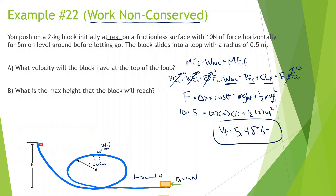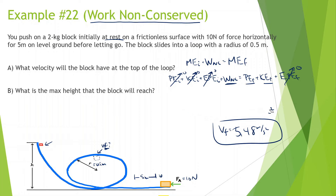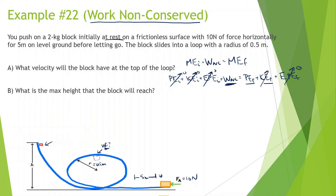Next question: what is the maximum height that the block reaches? I'm going to use the same approach, starting from the very beginning. Since there's no friction or anything like that, at the very beginning there's only work non-conserved — it's getting pushed. And at the highest point, there's no kinetic energy because velocity equals zero, so work non-conserved equals potential energy final.